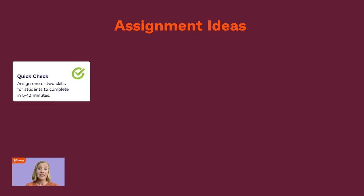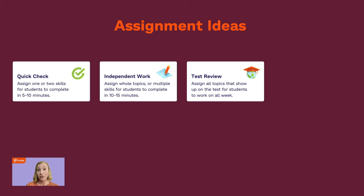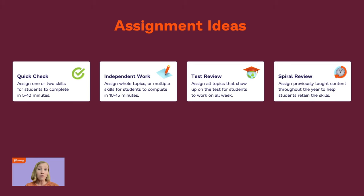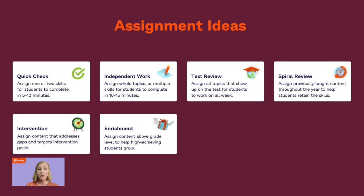Here are some assignment ideas to give you a sense of how to replace what you're currently doing with assignments on Prodigy. For a quick check, just assign one or two skills — students can complete this in about 5 to 10 minutes. For independent work, you can assign whole topics or multiple skills to complete in about 10 to 15 minutes. For test review, assign all the topics students will see on the test and have them work on it all week long. For spiral review, assign previously taught content throughout the year to help students retain those skills. For intervention, you can assign content that addresses gaps and targets intervention goals for MTSS, RTI, or even IEPs — then have the data you need to track intervention progress. For enrichment, you can assign content above grade level to high-achieving students.